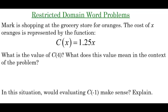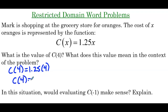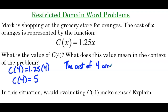Our first example: Mark is shopping at the grocery store for oranges. The cost of x oranges is represented by the function c of x equals 1.25x. What is the value of c of 4? Starting with evaluating c of 4, so c of 4 is 1.25 times 4, so c of 4 equals 5. It means that the cost of 4 oranges is $5.